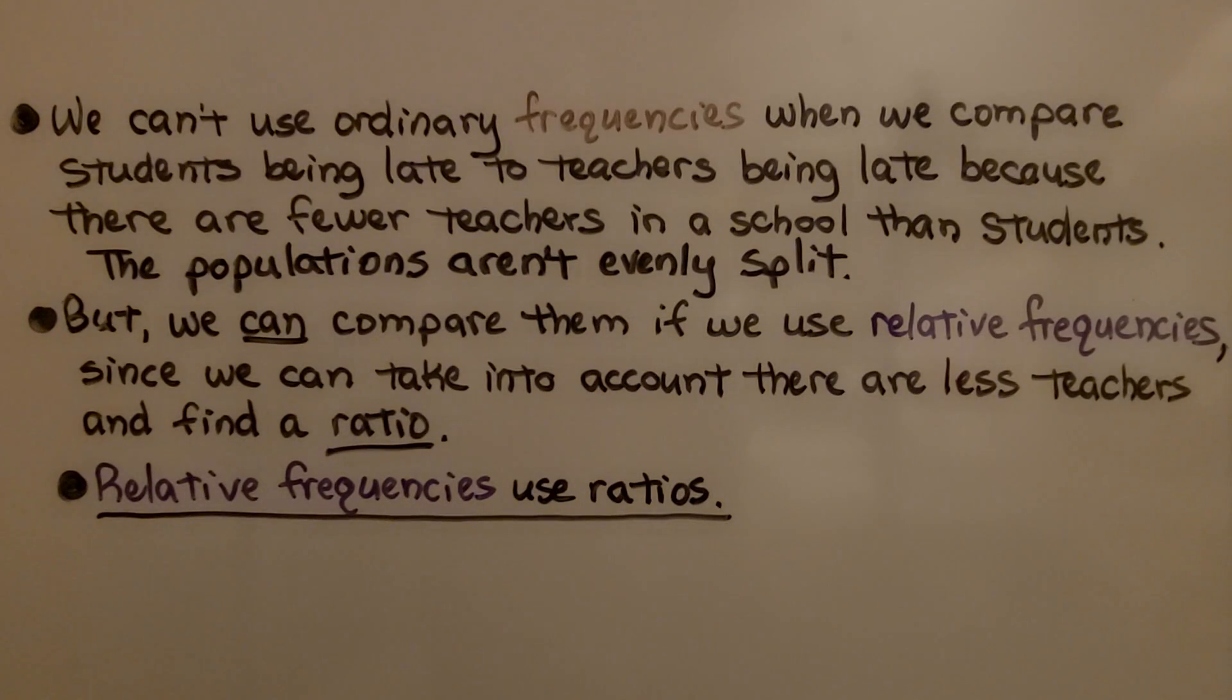We can't use ordinary frequencies when we compare students being late to teachers being late because there's fewer teachers in a school than students. The populations aren't evenly split, but we can compare them if we use relative frequencies since we can take into account there's less teachers and find a ratio. Relative frequencies use ratios.